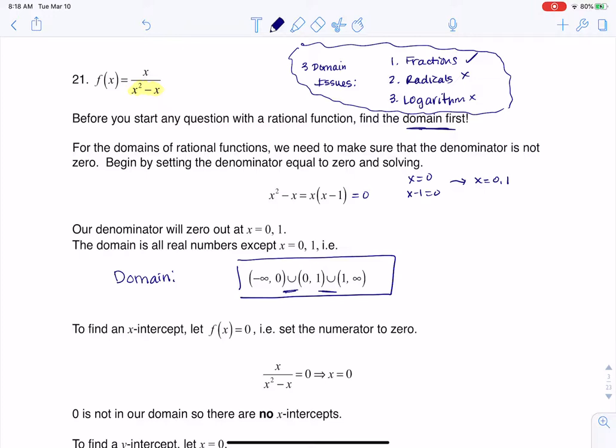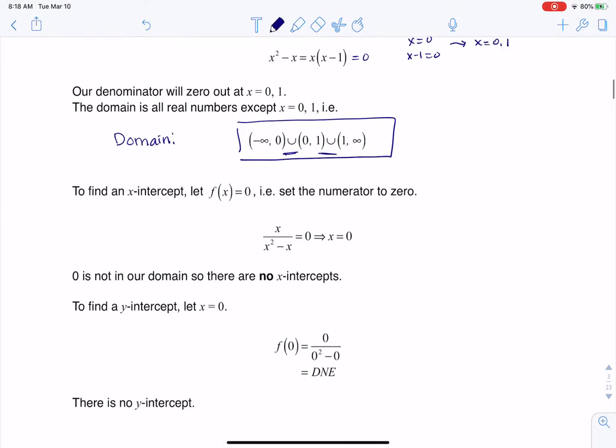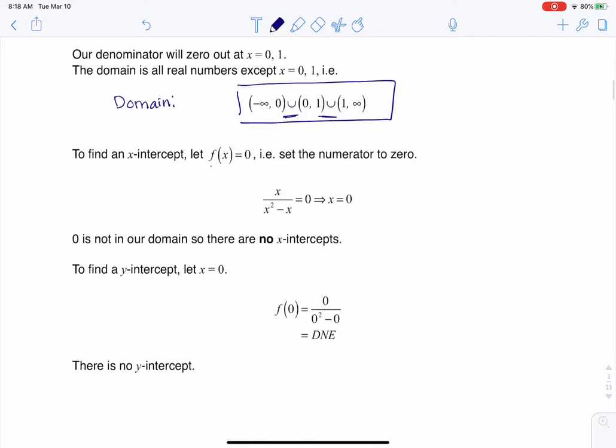Now we can go about finding the x and y intercepts. Anytime you want to find an x-intercept, you want to let y equal zero. So you see me setting my function equal to zero. Whenever you have a fraction that's equal to zero, that means the numerator needs to be zero, and really the numerator only needs to be zero.